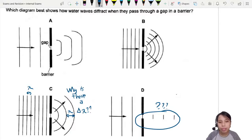So here my question is why is there a change in wavelength? It's not supposed to happen. Wavelength remains the same. So these two, out.